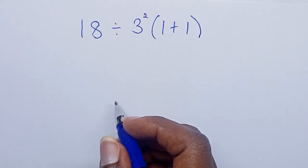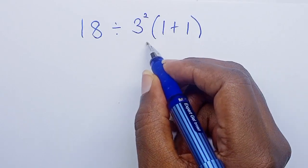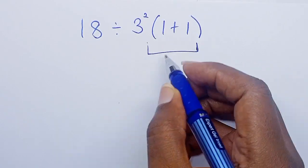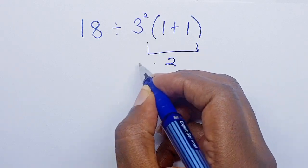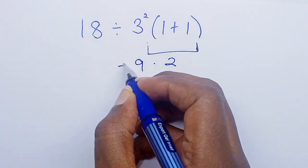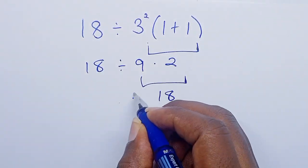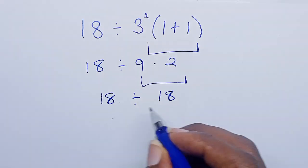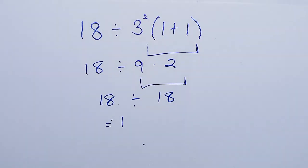So let's solve it. We shall have 1 plus 1 equals 2, then 3 squared is 3 times 3 which is 9. So 9 times 2 is 18, so we have 18 divided by 18 which equals 1. If you got your answer as 1...